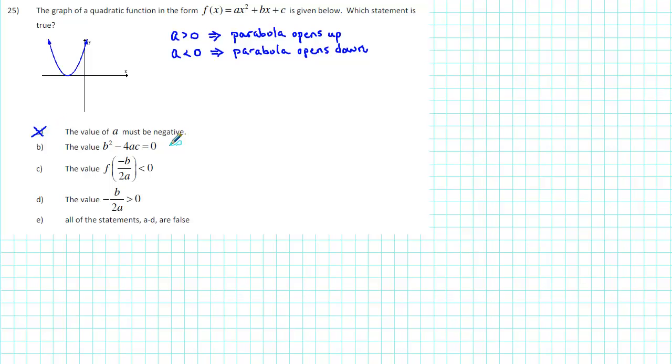The second statement is the value b² - 4ac is equal to 0. Recall that b² - 4ac is called the discriminant, and it's part of the quadratic formula, which is used to find the x-intercepts of the graph of a quadratic function.